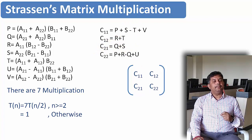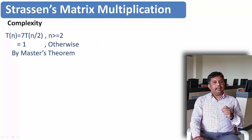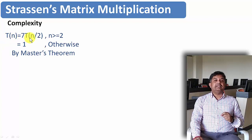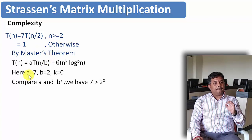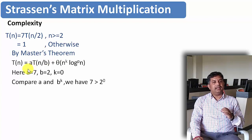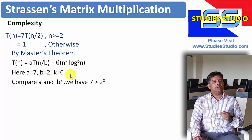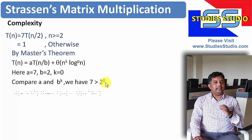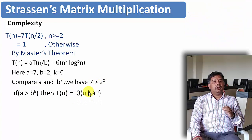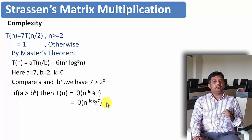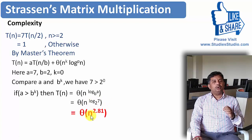Let us find the complexity. T(n) = 7·T(n/2) if n ≥ 2, 1 otherwise. Applying Master's Theorem and comparing with T(n) = a·T(n/b) + θ(n^k · log^p(n)): a = 7, b = 2, k = 0, p = 0. Since 7 is greater than 2^0, we apply the formula and get θ(n^(log_2 7)), which is θ(n^2.81). In our previous general matrix multiplication it was θ(n³), and now it is reduced.